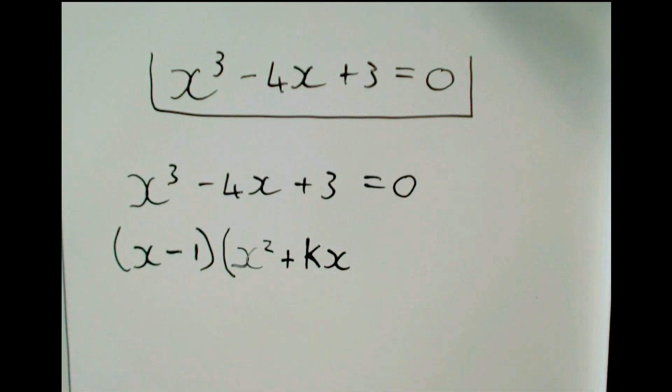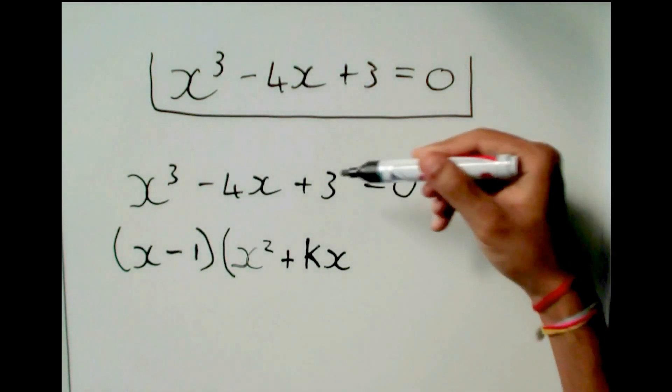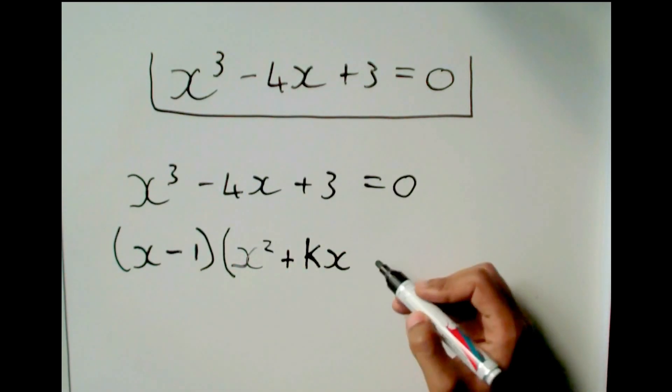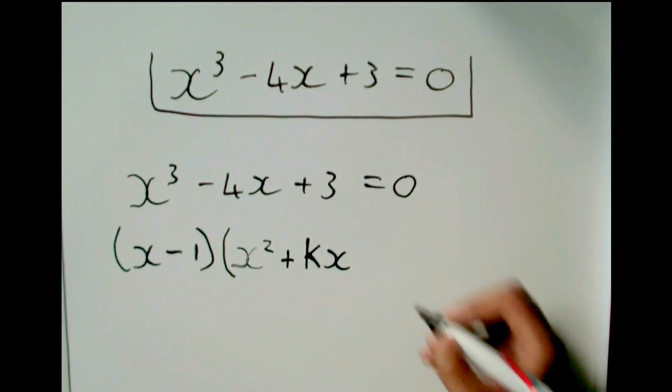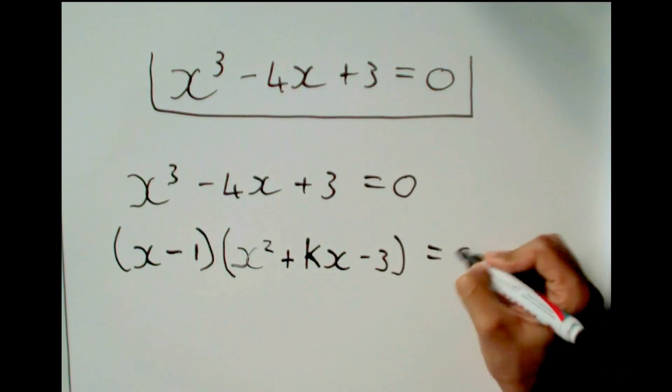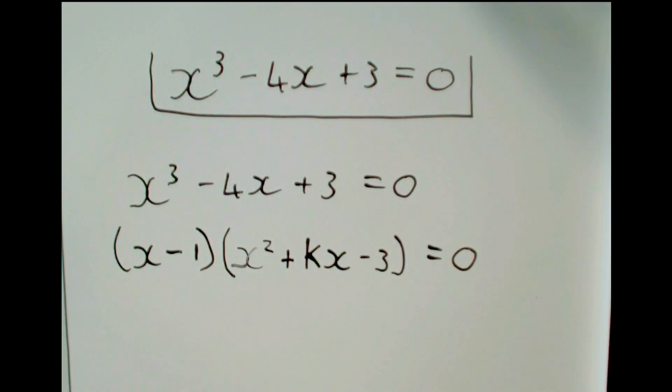But the last term, I do know. I know that this number times the last term must give me the last number, as explained in the squared case. So minus 1 times what will give me 3? It will give me minus 3.